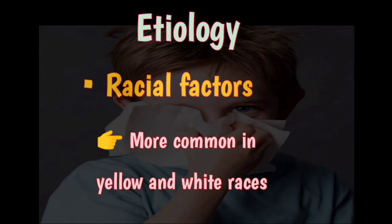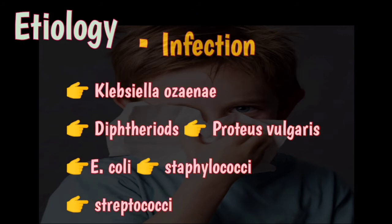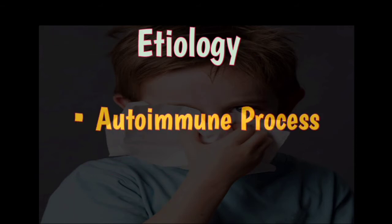Racial factors are also involved, as primary atrophic rhinitis is more common in yellow and white races. Nutritional deficiency also plays a role, like deficiency of vitamin A, D, iron, and some other dietary factors. Various organisms are cultured from cases of atrophic rhinitis, such as Klebsiella ozaenae, which is the main causative organism, and other bacteria like diphtheroids, Proteus vulgaris, E. coli, staphylococci, and streptococci. These are all considered secondary invaders responsible for foul smell rather than primary causative organisms, and they are all proteolytic bacteria.